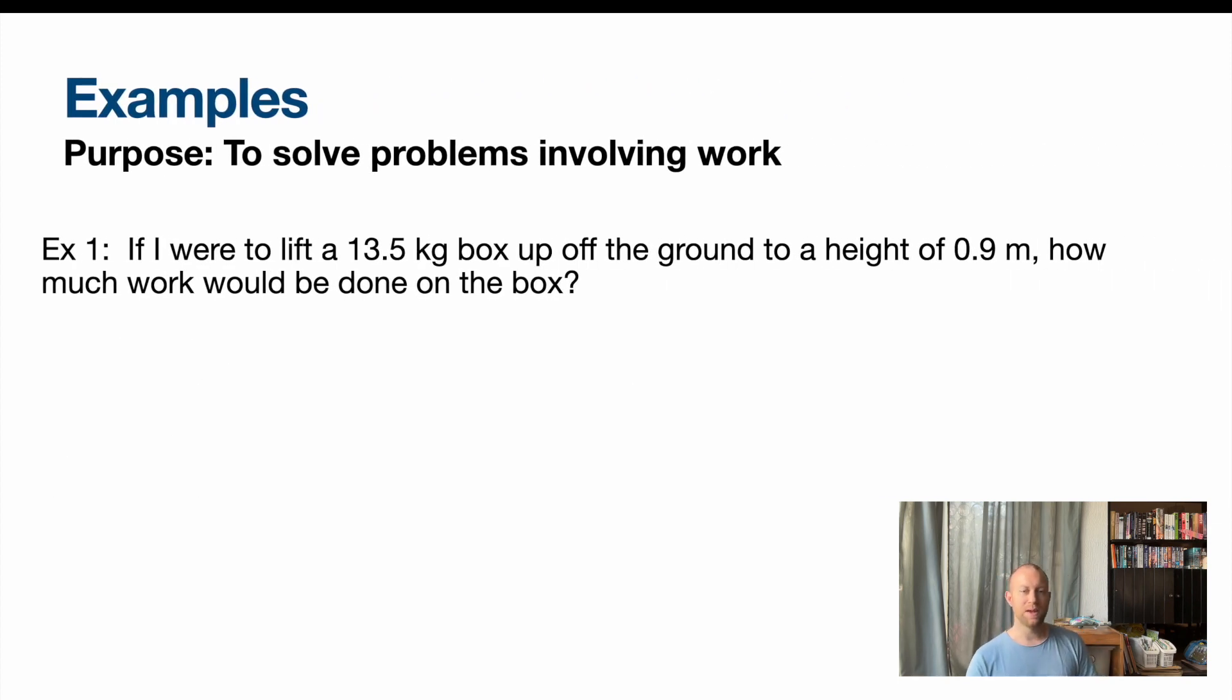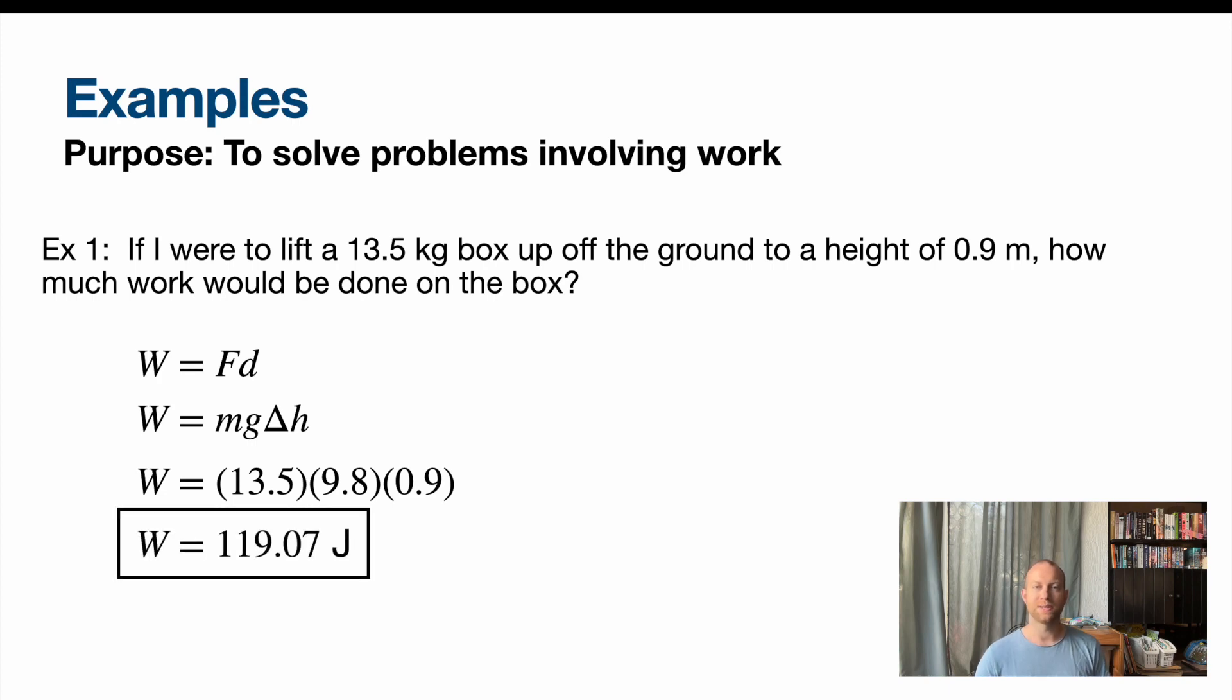So here's an example. If I were to lift a 13.5 kilogram box off the ground to a height of 0.9, we can talk about how much work is done on the box. This equation is force times distance. Now the force that we're applying is the force of gravity. It doesn't say it's at constant speed. We can assume it is because we're just dealing with what's the work done on that object. So mg times delta H. Delta H being what's the change in its height because I need to apply it over a distance moved. We have those numbers, plug it in, multiply them, here is what our work is equal to.